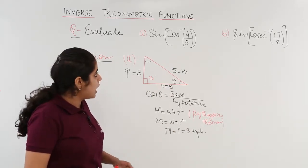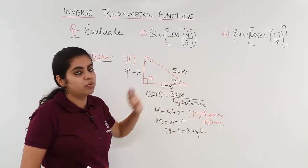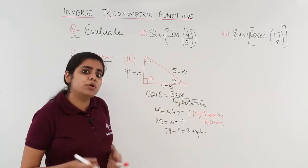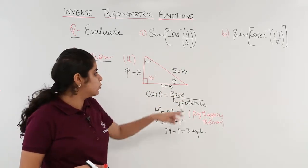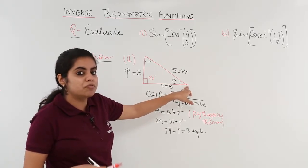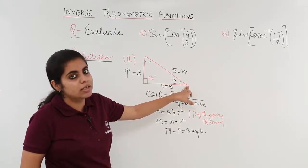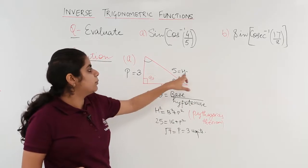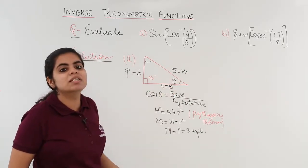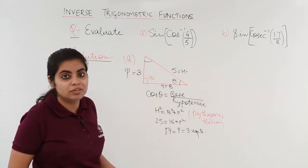Now, I have cos inverse as 4 upon 5. What would be sine inverse? Sine inverse would be simply when I find out sine theta, it would be more clear. Sine theta is what? 3 upon 5. So, sine inverse is what? 3 upon 5.